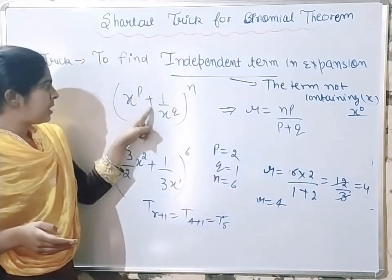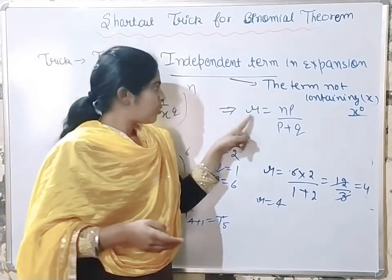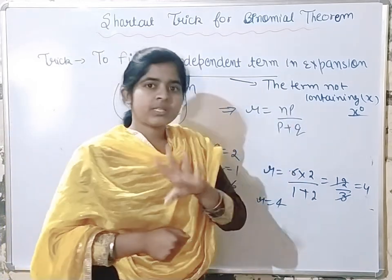The formula is: for (x to power p plus 1 upon x to power q) raised to power n, the value of r is np upon (p plus q).